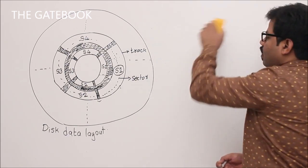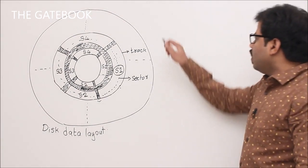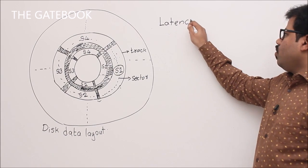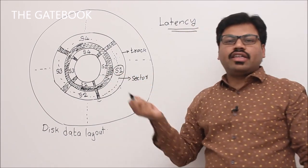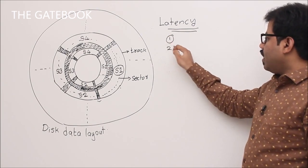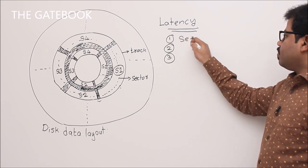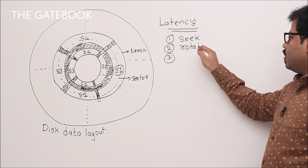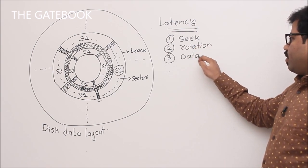Apart from capacity, we need to focus on delays — how we store and retrieve data determines the latency of the disk. There are three important delays: seek latency, rotational latency, and data transfer time. I will teach you each one.